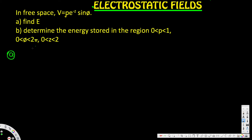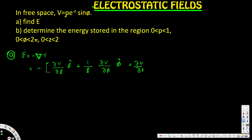Let's go ahead and do Part A. Part A is asking for the electric field. We know that the electric field is equal to negative del V. V is provided, so we can find the electric field. The del operator in cylindrical coordinates is the partial derivative with respect to ρ, partial derivative with respect to φ, and partial derivative with respect to z. The generic gradient equation looks like: partial derivative of V with respect to ρ in the ρ direction, plus one over ρ partial derivative of V with respect to φ in the φ direction, plus partial derivative of V with respect to z in the z direction.